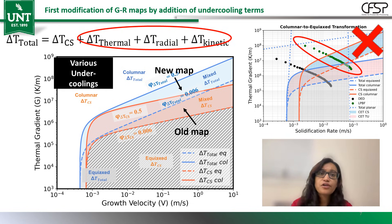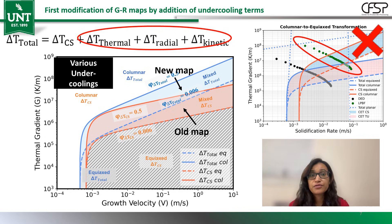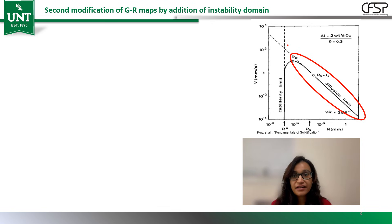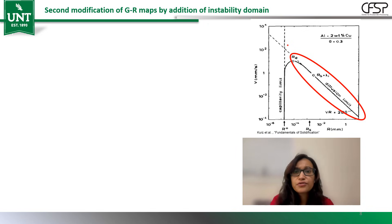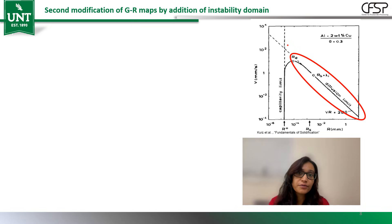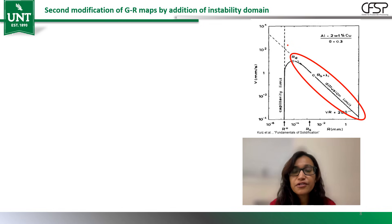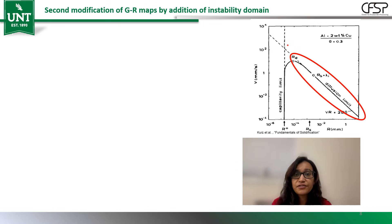But something still wasn't fitting. The top of the melt pool stubbornly remained equiaxed in the map even though the real microstructure was cellular, which meant there was still a missing piece. While digging into the early papers of Kurtz and Trivedi, we stumbled upon a fascinating detail. Kurtz mentioned almost as a note that at very high growth velocities, beyond the instability domain, the microstructure can revert back to columnar or cellular instead of becoming equiaxed. But traditional processes like casting never reach those high velocities, so these instability regions were never experimentally confirmed and never mapped to the GR maps.